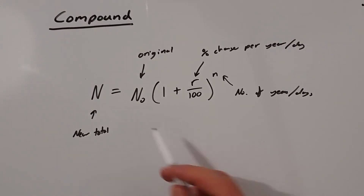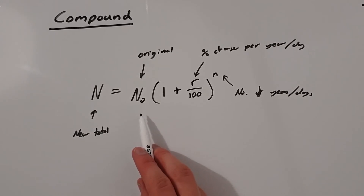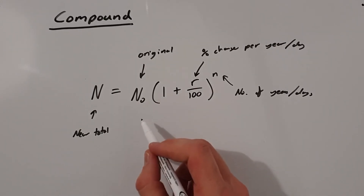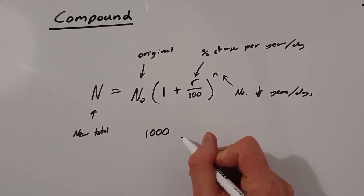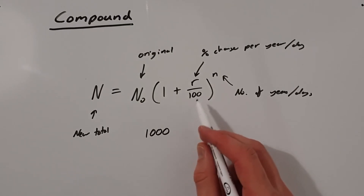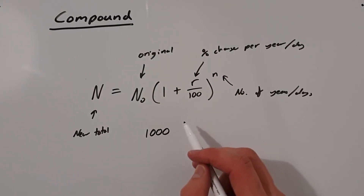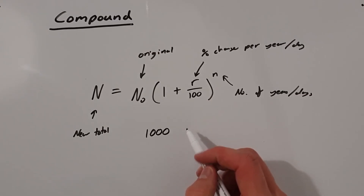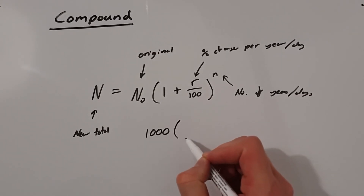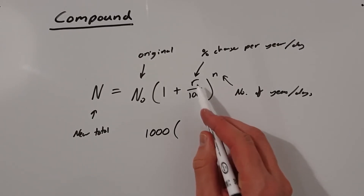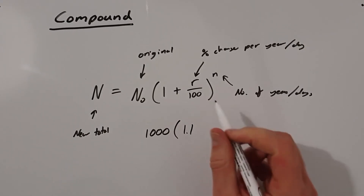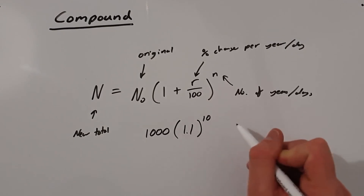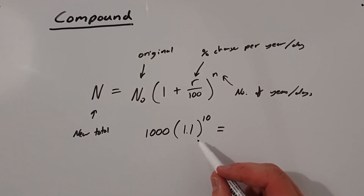To show a quick example with simple numbers: our original amount is £1,000 and we want to increase it by 10% for 10 years. So 10 divided by 100 is 0.1, and 1 plus 0.1 is 1.1, so we multiply by 1.1 to the power of 10. Now we need to put this into our calculator to find the answer.